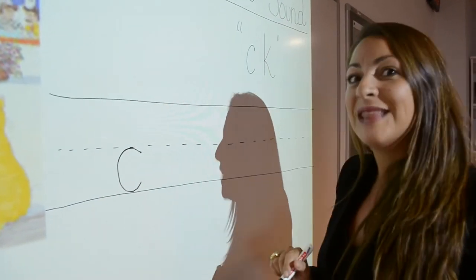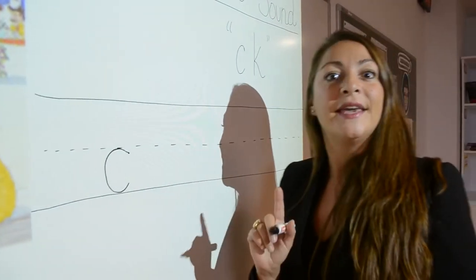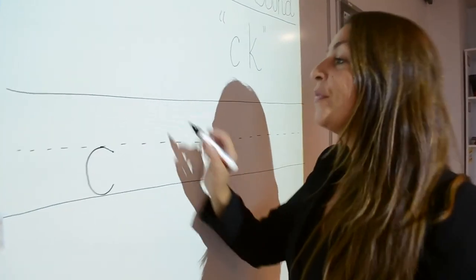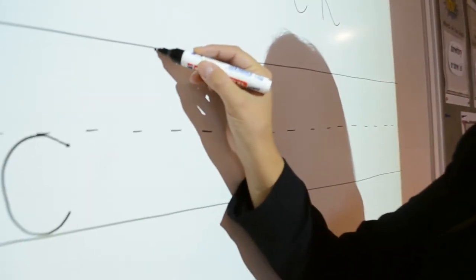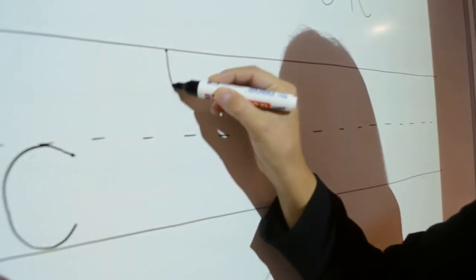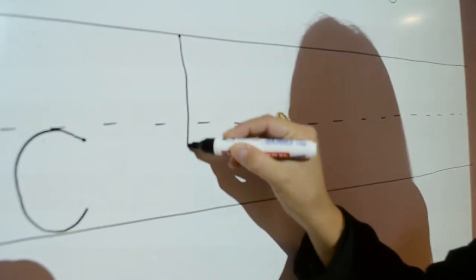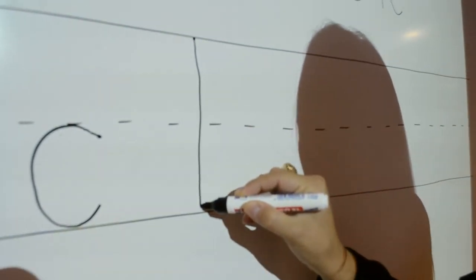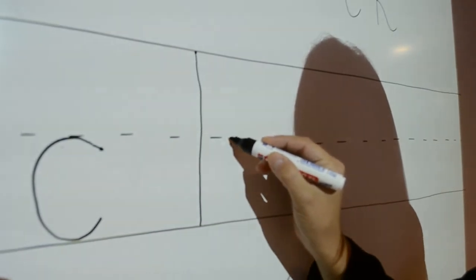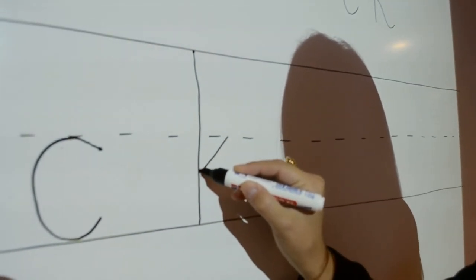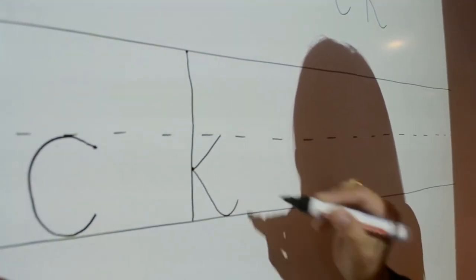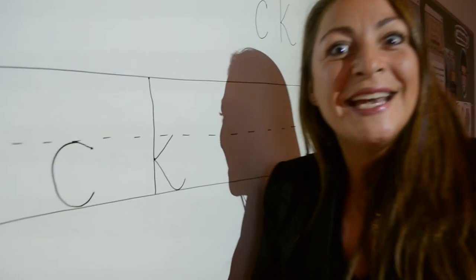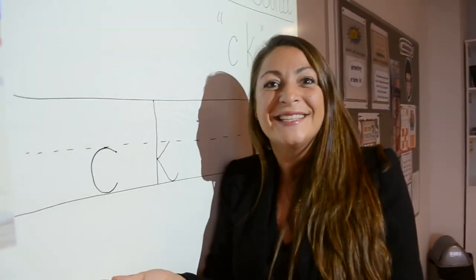Now let's see the kicking K. We start at the top, we go down all the way. We give it one arm and one kicking leg. How easy was that?